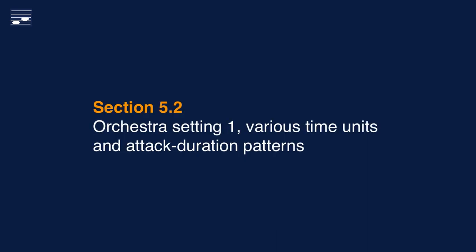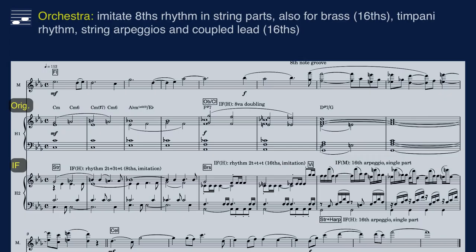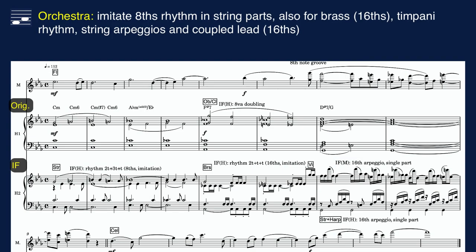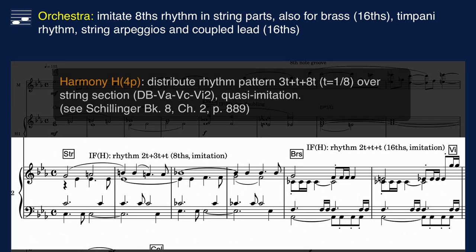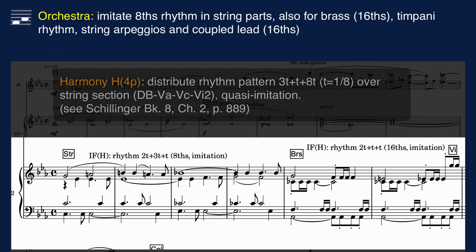Let's create an alternative instrumental form combination for symphony orchestra, and start with a new technique that yields quasi-imitation in a harmony layer. Take a rhythm pattern — here three plus one plus eight eighth notes — and distribute this pattern successively over the string section groups, moving from double basses to violas, then cellos and finally violins.